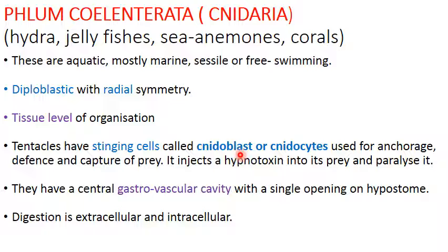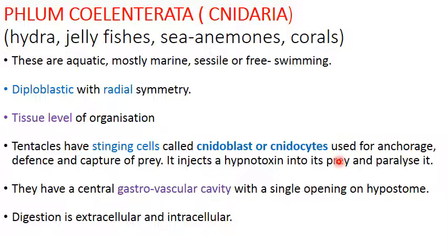The stinging cells are used for anchorage — attaching to a substratum — and for defense. When threatened, they puncture the predator with a poison called hypnotoxin. When injected into prey, the prey gets paralyzed and can then be fed upon. There is a central cavity called the gastrovascular cavity with a single opening present on the hypostome. Digestion is first extracellular (outside the cell) and then intracellular (inside the cell).